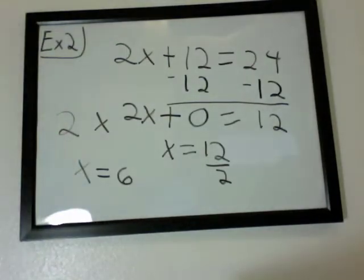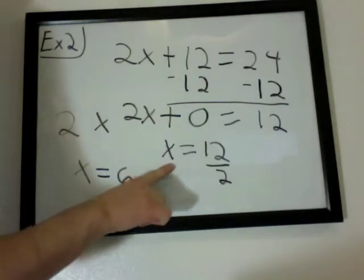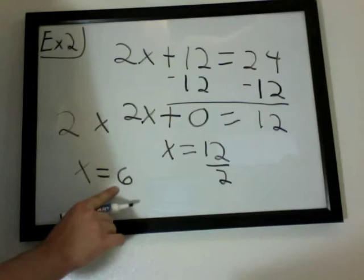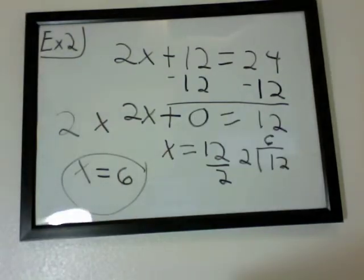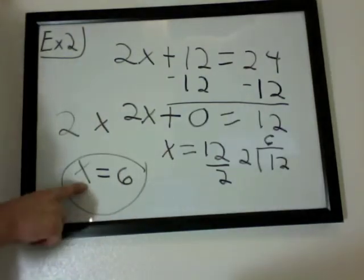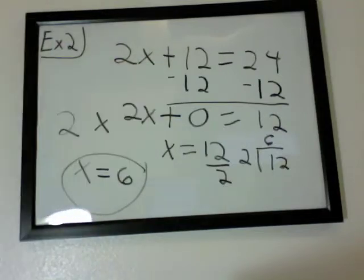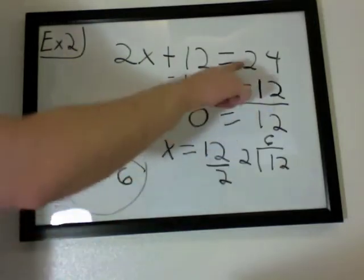Because your 2s would cancel, so you're left with x on this side. Then you'd have to do 12 divided by 2, which would be 6. So x equals 6. See if that works into the original equation. Substitute the x for the 6. So 2 times 6 is 12 plus 12 is 24.